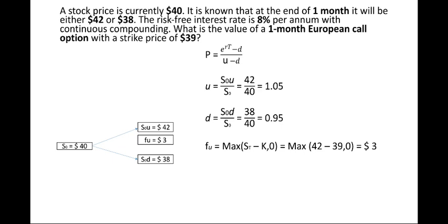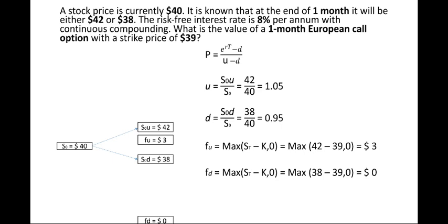Calculating the value of fd: the option will be exercised only when it is in the money. fd = max(St − K, 0) where St = S0d = $38. So max(38 − 39, 0) = max(−1, 0) = 0. Therefore fd = 0.